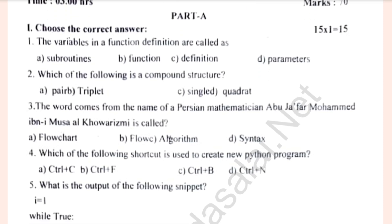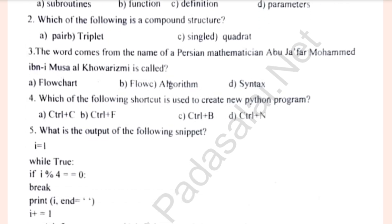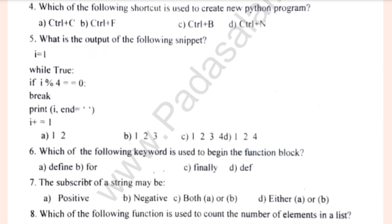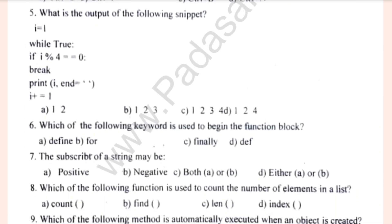Let's see. The variables in the function definition are called as. Which of the following is a compound structure? What is the output of the following snippet? The subscriber of a string maybe?